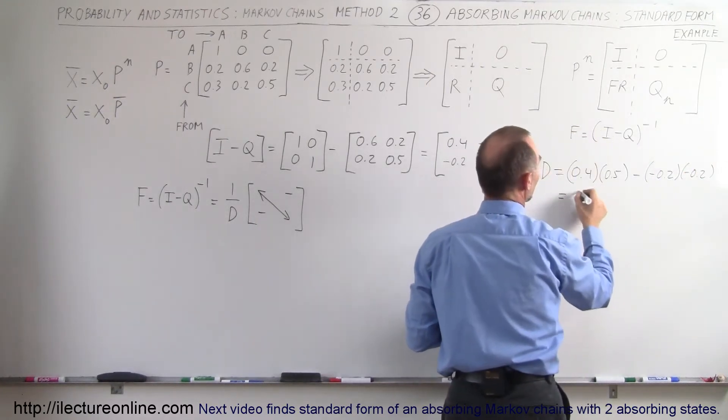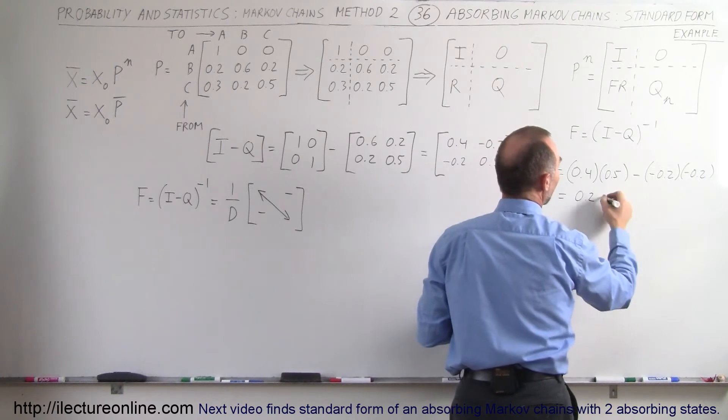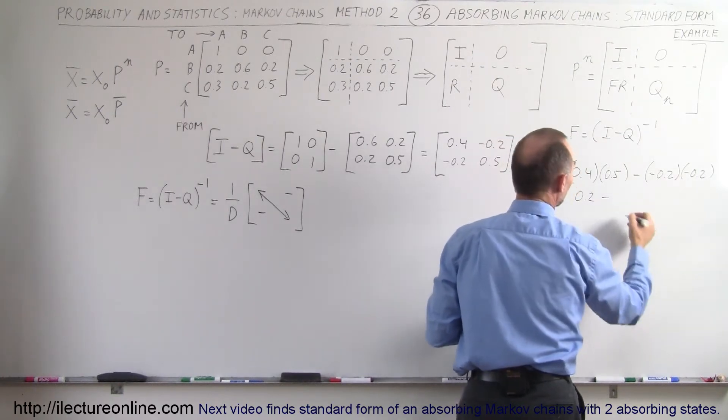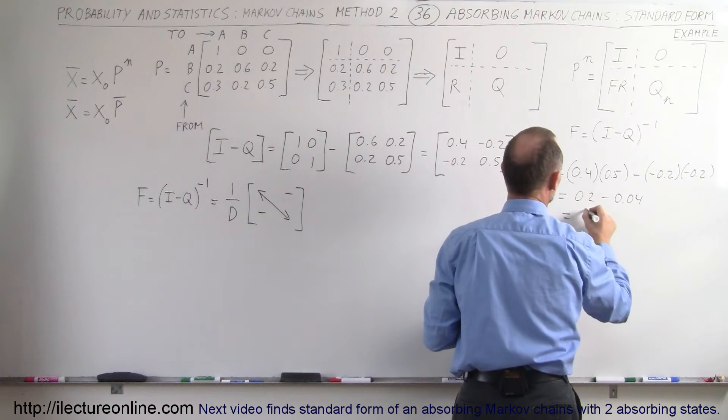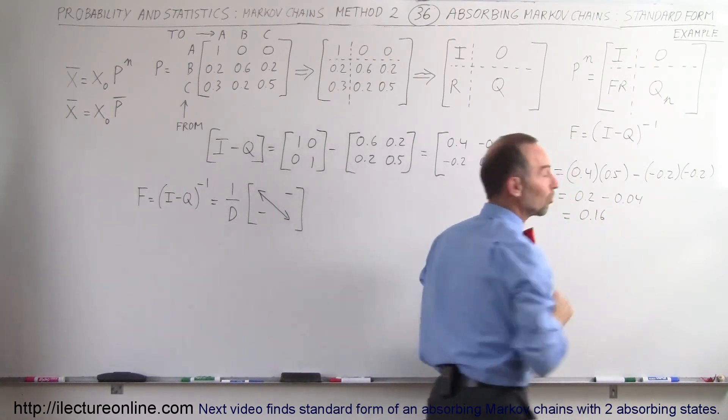So this is equal to 0.2 minus, because minus times minus is plus, 0.04. So this is equal to 0.16. That's the determinant.